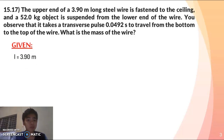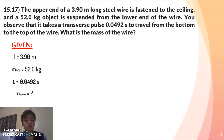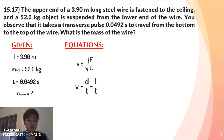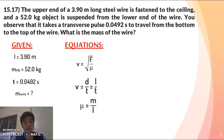Let us first identify our givens so that we can solve it more efficiently. We have a length of 3.90 meters, a mass of the object of 52 kilograms, and a time of 0.0492 seconds. We are looking for the mass of the wire. The equations we need are: velocity equals the square root of F over mu, where F is our force and mu is the linear density of the wire. Also, velocity equals distance over time, or length over time.